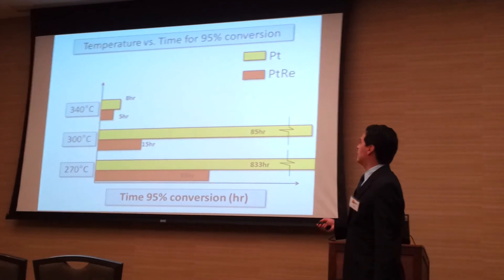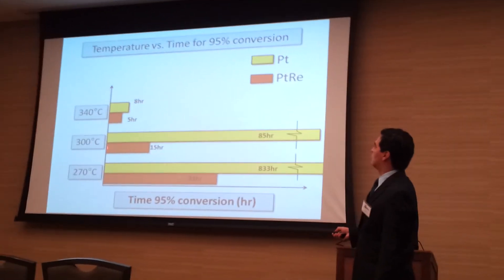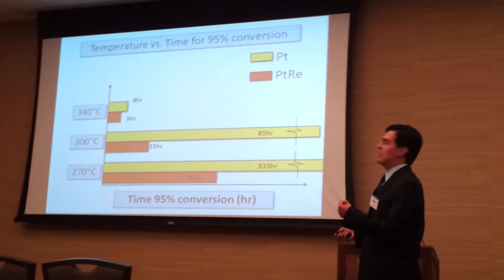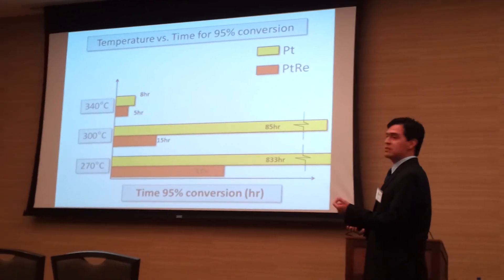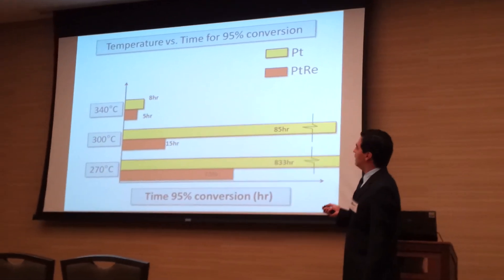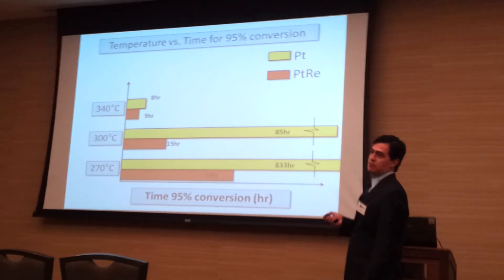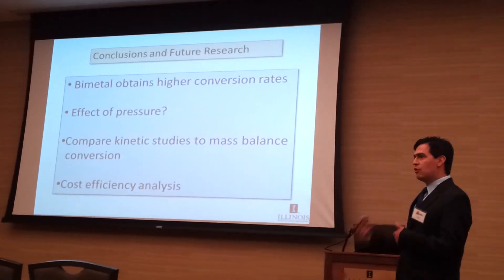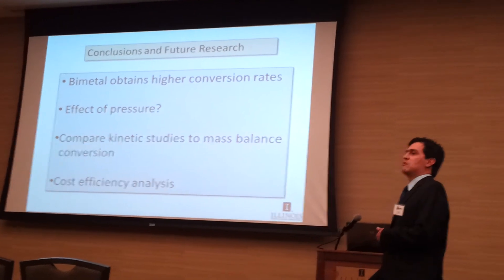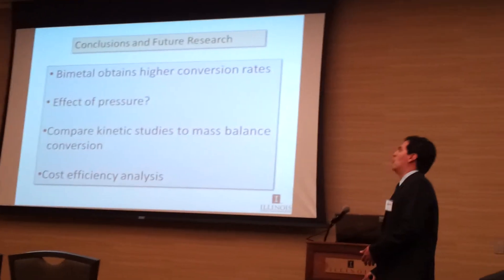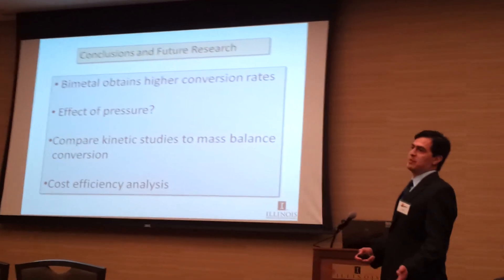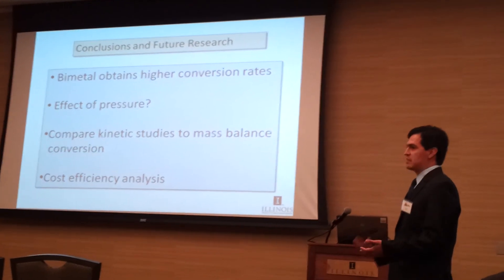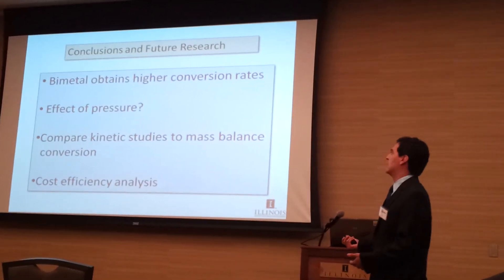We need to understand whether it is better to work at 300 degrees Celsius with both metals, or more cost-effective to just use platinum alone for eight hours at 340 degrees Celsius. Since the metals are expensive, we have to understand the tradeoff between energy cost and catalyst cost.